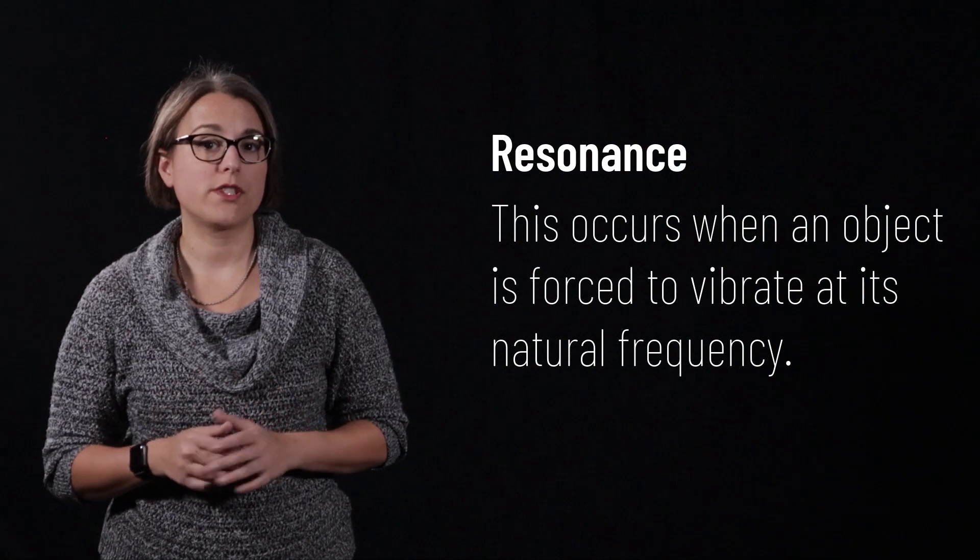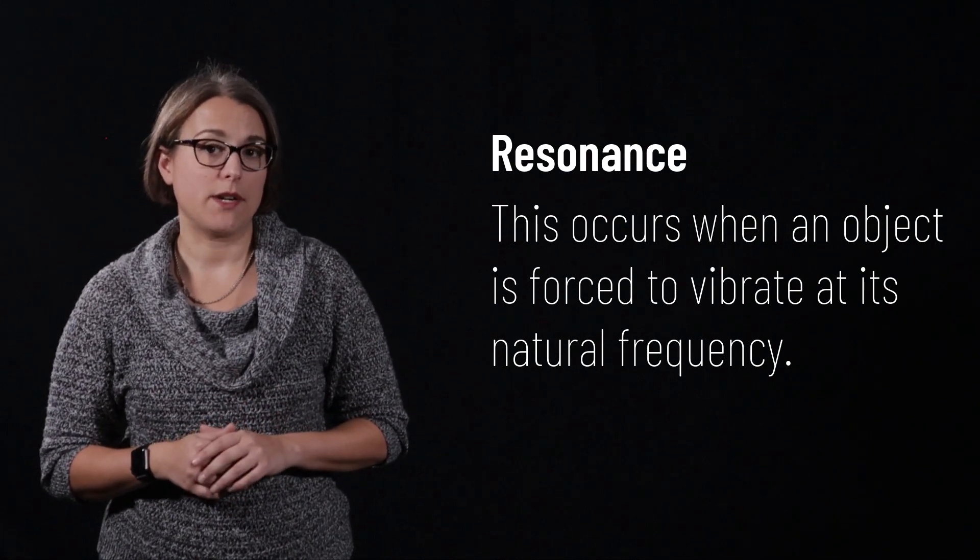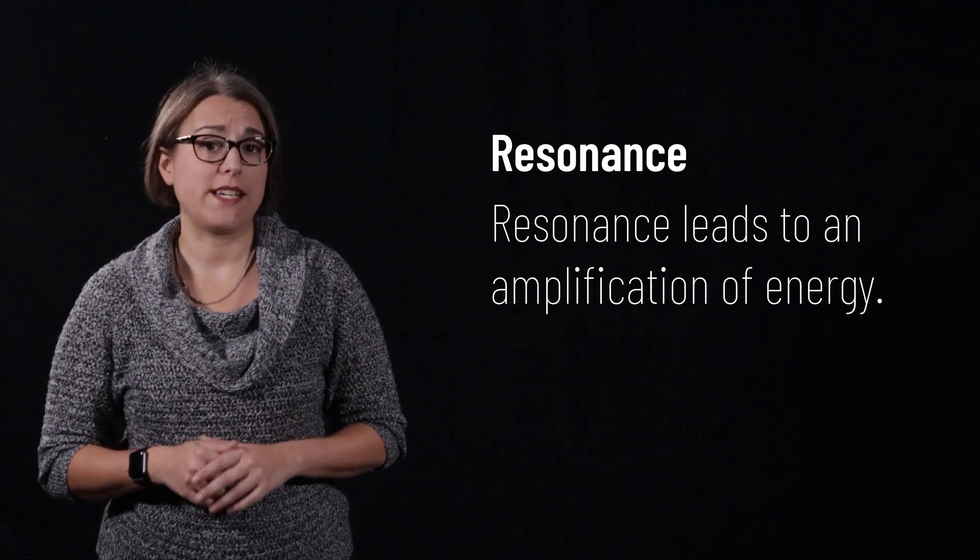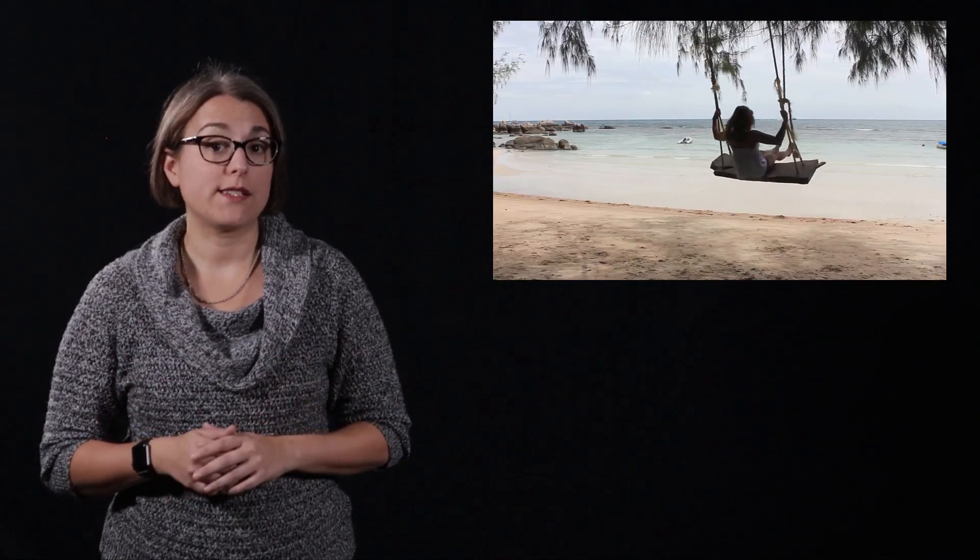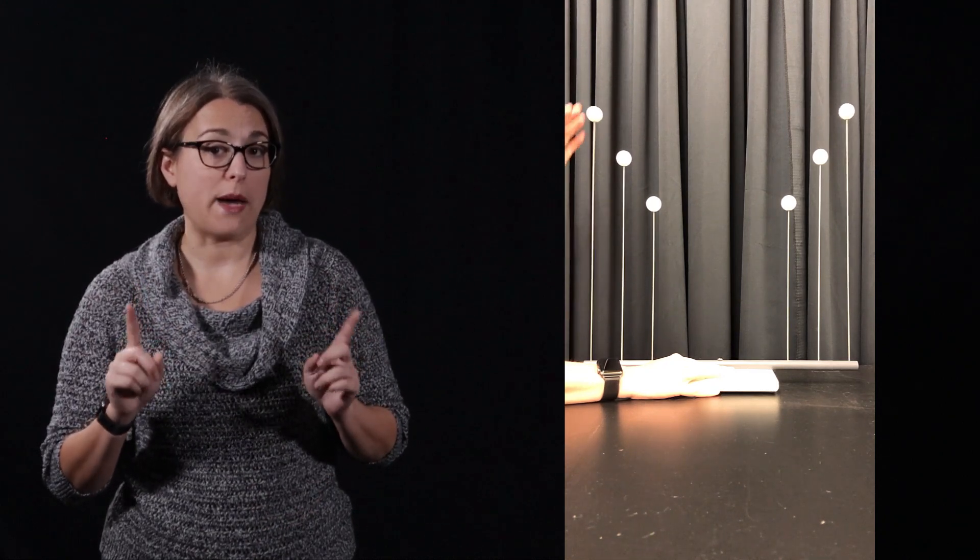If an object is forced to vibrate at its natural frequency, that phenomenon is known as resonance. During resonance, energy is amplified. One example of this can be demonstrated by swinging on a swing set. If you pump your legs at the natural frequency, then the amplitude of your swing will be increased. In this demo, two sets of three pendulums with different lengths are connected by a tube. When I get the largest pendulum swinging, it moves back and forth at its natural frequency. That vibration travels through the tube and excites the identical pendulum on the other side, causing it to move back and forth as well. This forced vibration from the left hand pendulum is equal to the natural frequency of the right hand pendulum, so resonance occurs, and both pendulums continue to move.